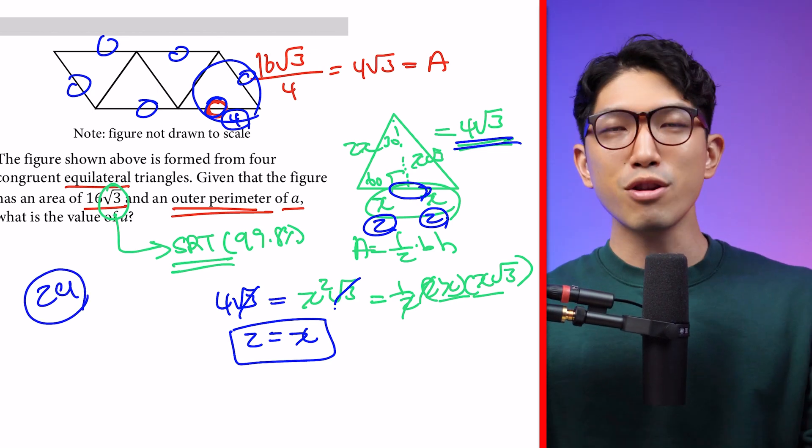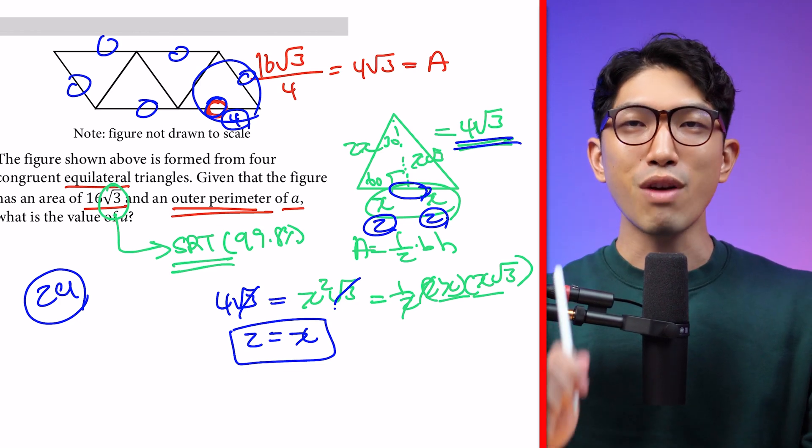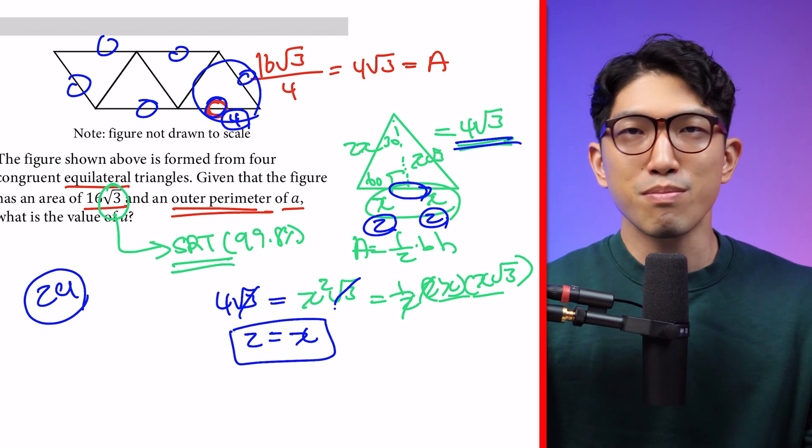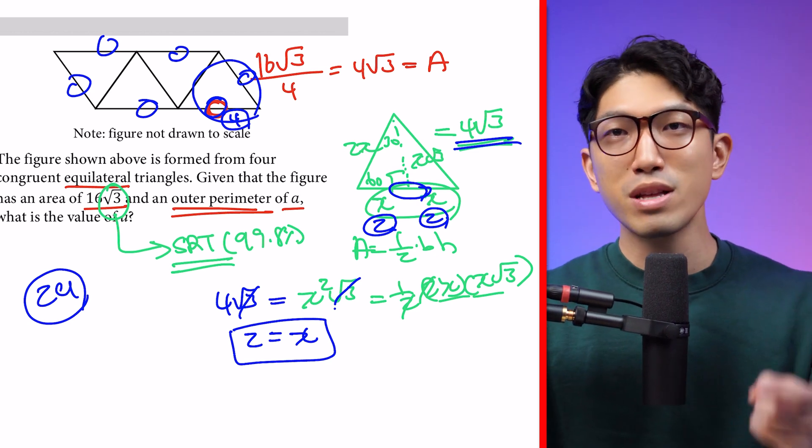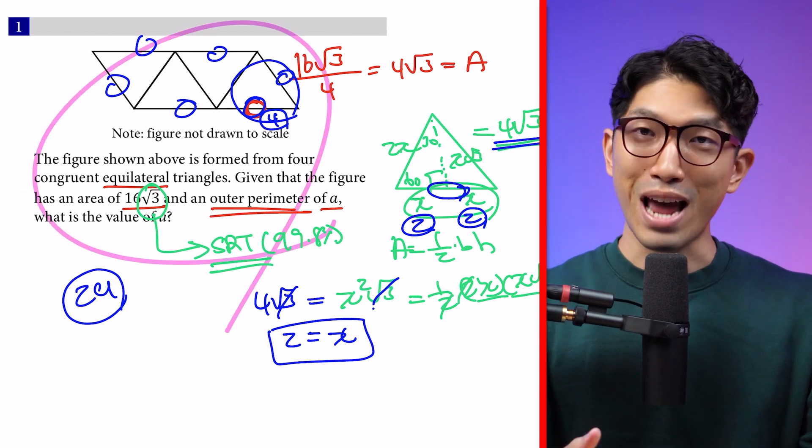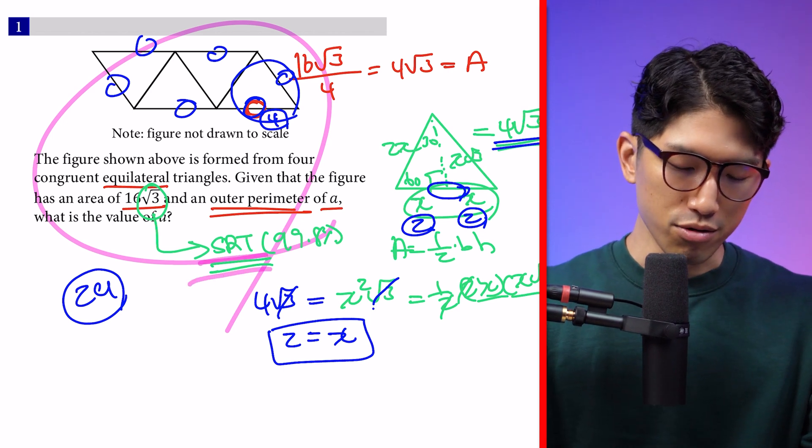The main takeaway from this question is whenever you see radical 2 or radical 3 in a triangle question, there's a very high chance it's testing you on special right triangles. There's only three places you're going to see radicals on the SAT: exponents, quadratics, and special right triangles. If you see a triangle question with radical 2 or 3, it's probably testing you on special right triangles.